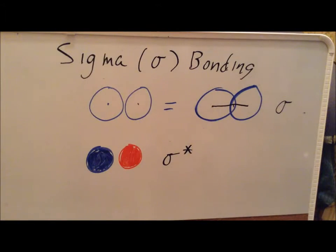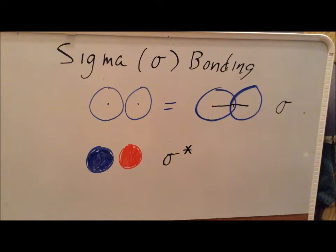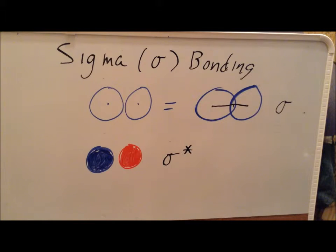So if we have a bond where there is an increase in electron density in the overlap region, that's a bonding orbital. If we have a decrease in electron density in that overlap region, we have an antibonding orbital. And if we have no change at all in the electron density, we have a nonbonding orbital — essentially no bonding at all.